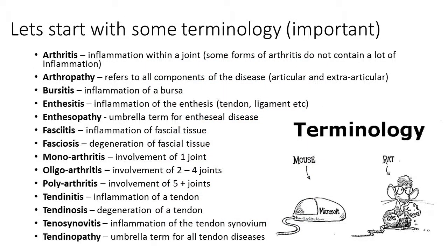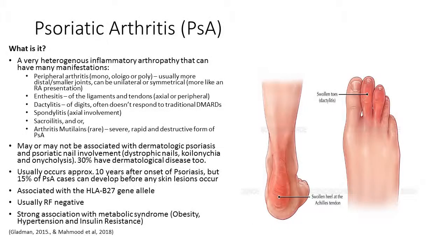The terminology slide has been included again to re-emphasise appropriate use of terminology. Starting with psoriatic arthritis, we are looking at what we essentially call the seronegative arthropathy. Even though rheumatoid arthritis can be seronegative, when we refer to seronegative arthropathy we usually refer to the conditions discussed within this lecture.